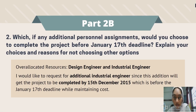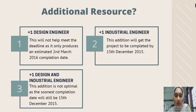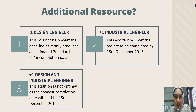Next, to help meet the deadline, the director is also willing to add personnel to the project. Based on the current resource sheet, two resources are over-allocated: the design engineer and industrial engineer. There are three possible options. The first option is to add one design engineer, but this addition only produces an estimated completion date of 2nd March 2016, which actually exceeds the project deadline.